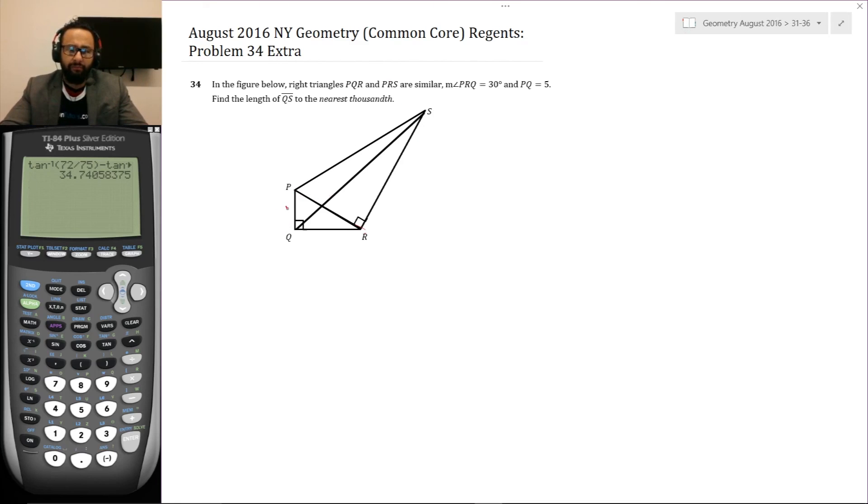I see PQ is five, and I know that the measure of angle PRQ is 30. QS looks like it's maybe three, four, five. It's hard to tell, but it's definitely significantly bigger than PQ, but it's not going to be 50. So I should get something between 20 and 30 maybe for the length of QS.